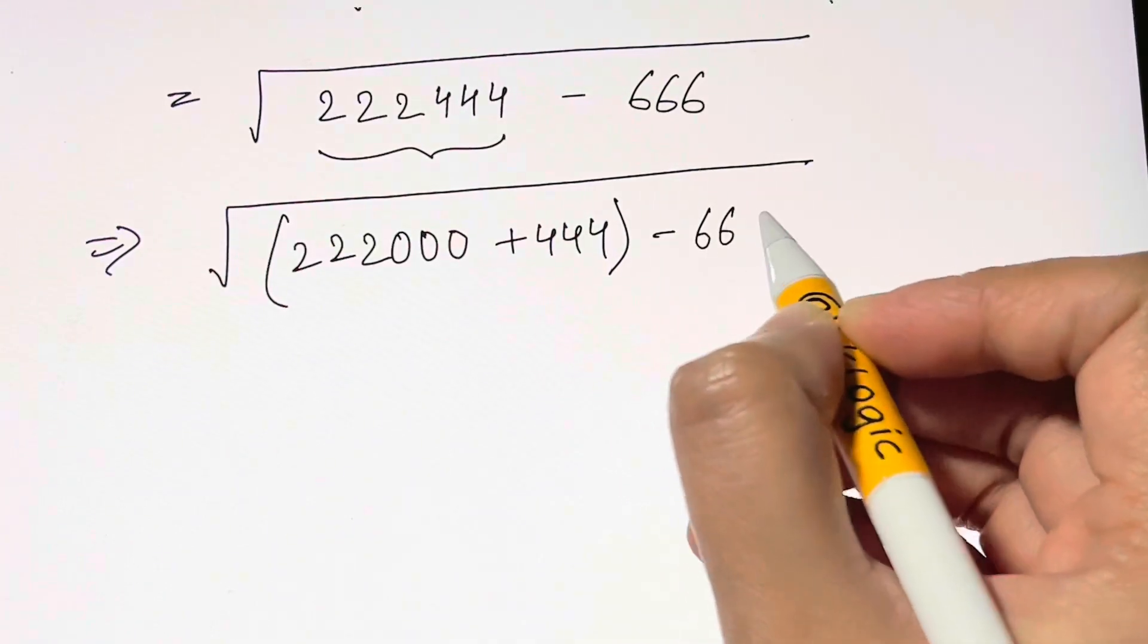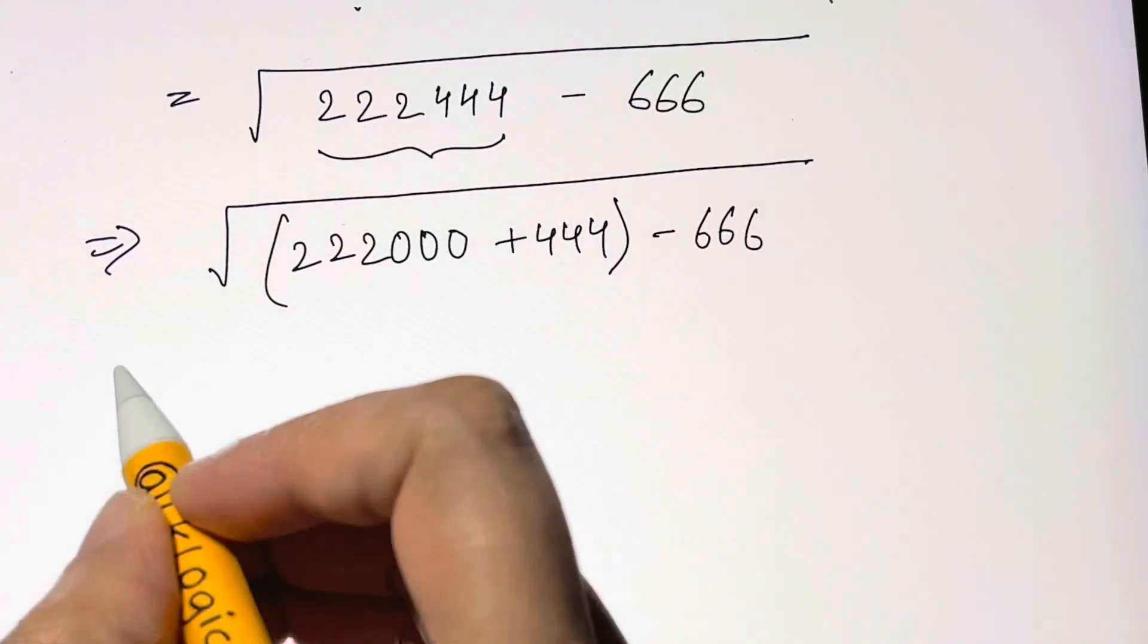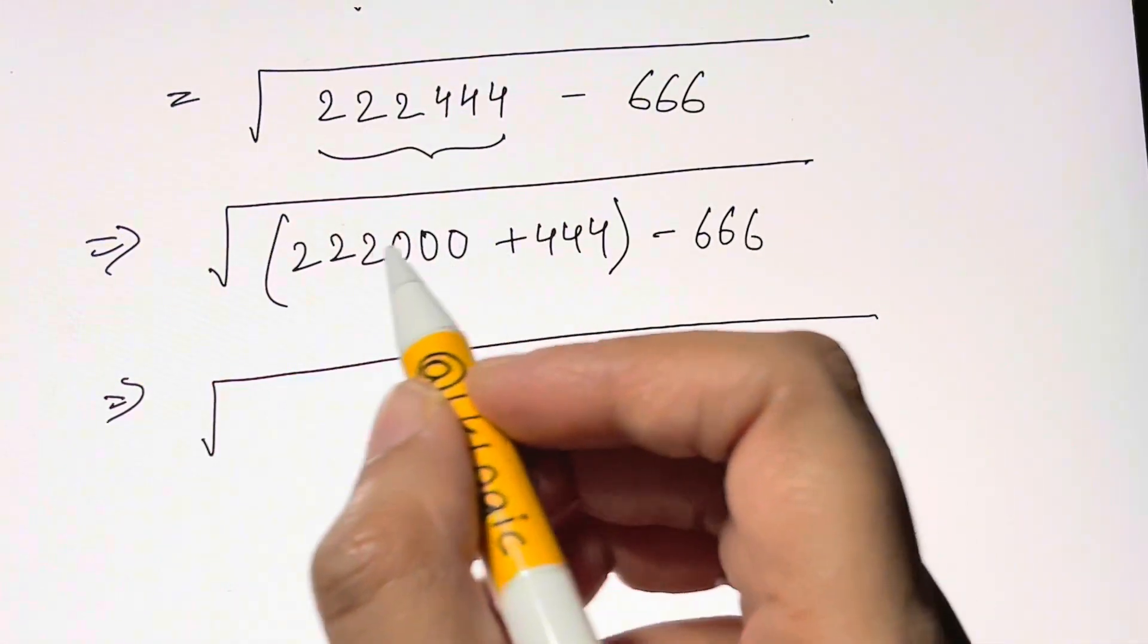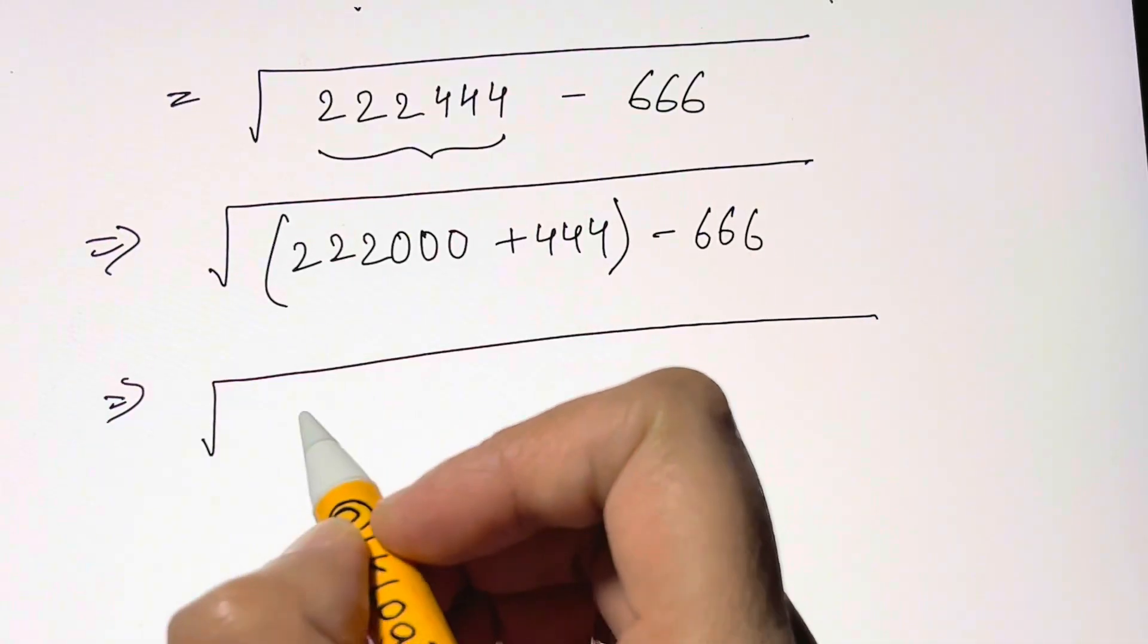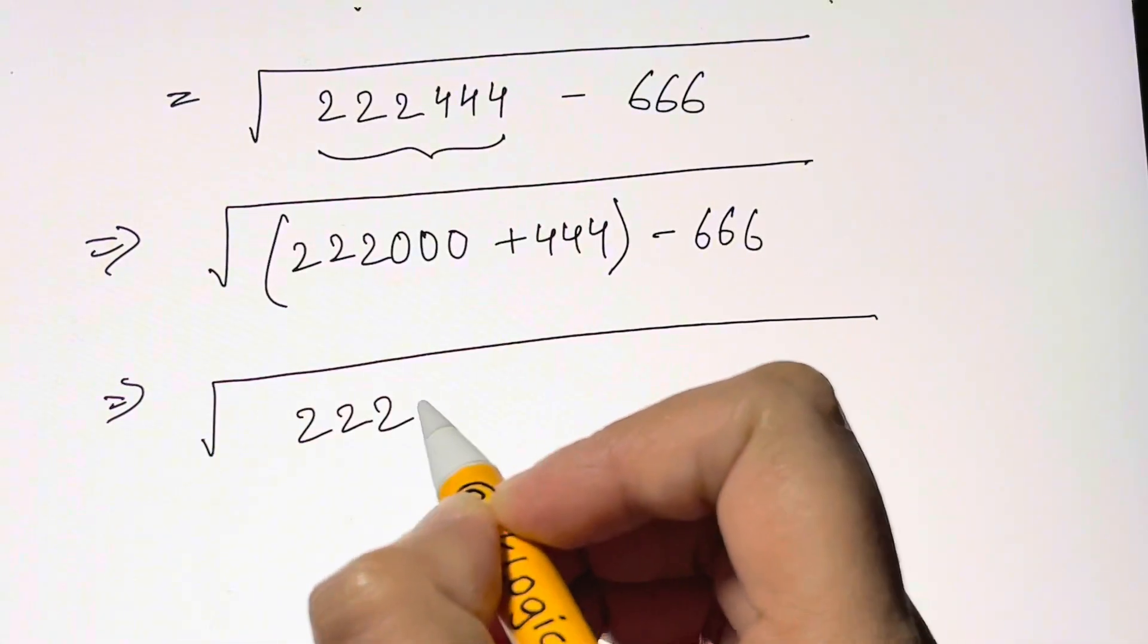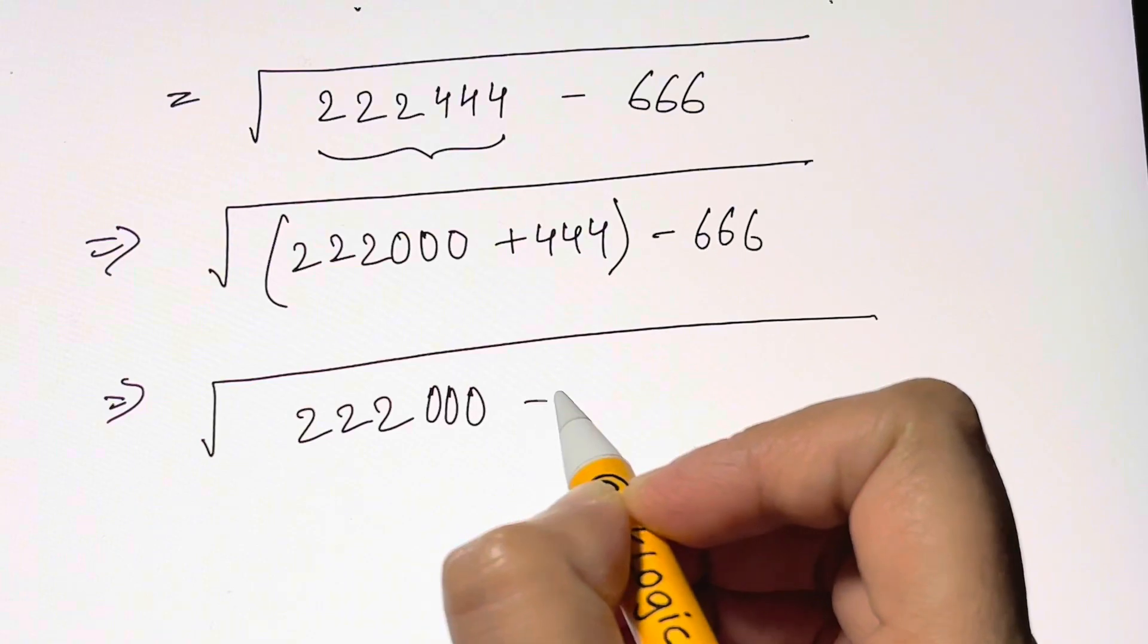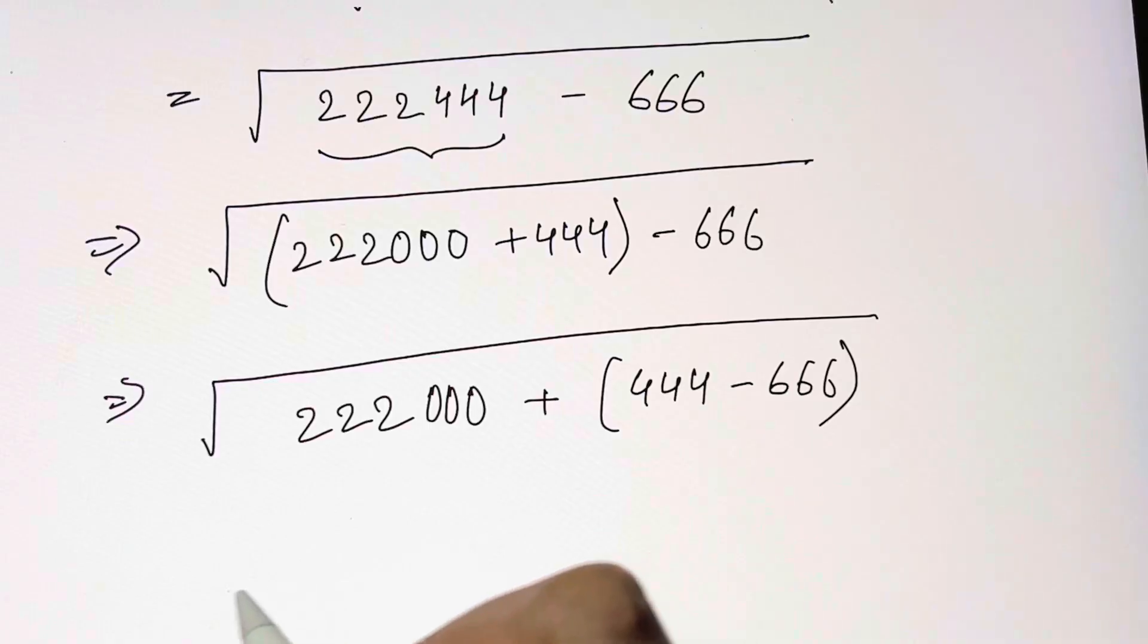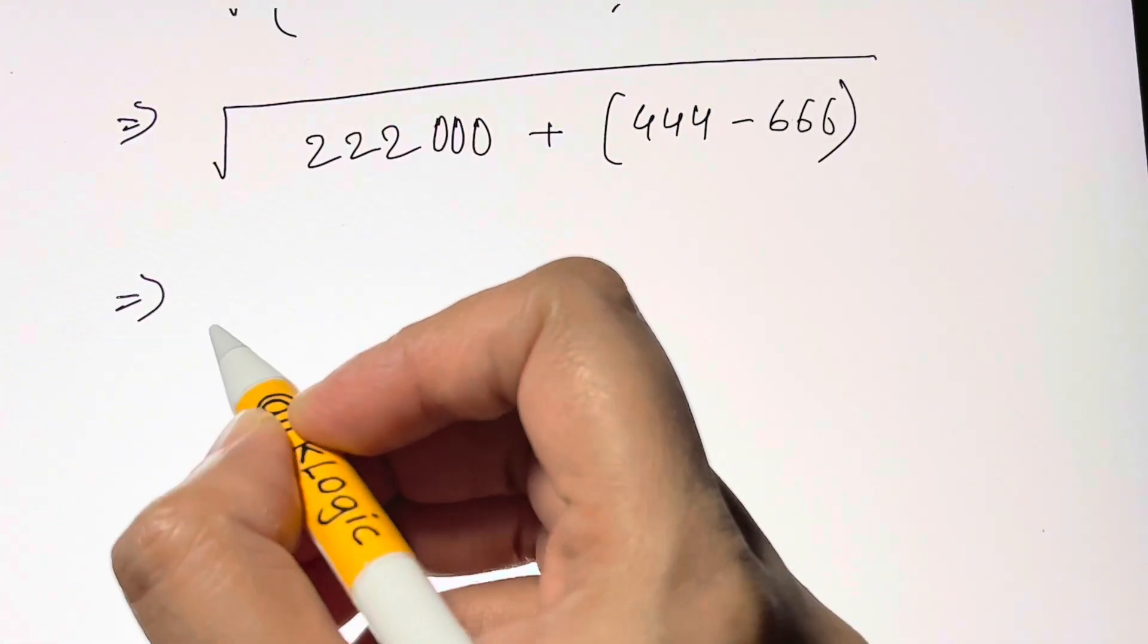Now what I'm going to do is associative property. Just club your parenthesis this side. You'll have 222000 plus I'll have 444 minus 666.